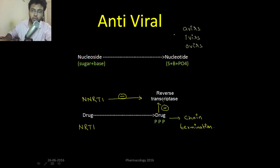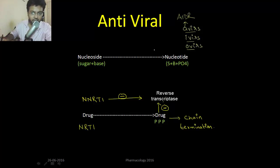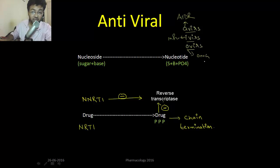Next are the antiretroviral drugs. These drugs generally end with -avirs, -ivirs, or -ovirs. Avirs are generally for AIDS — antiretroviral drugs like indinavir. Ivirs are used generally for influenza, like oseltamivir. Ovirs are for herpes, like acyclovir.